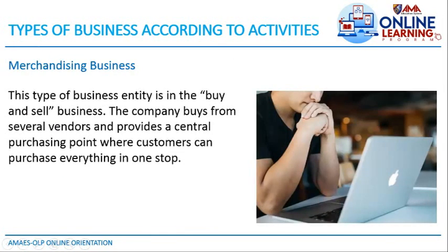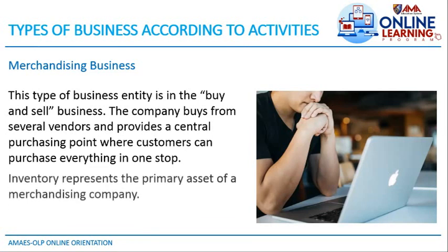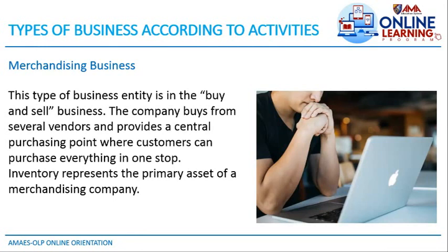The second type is the merchandising business — a buy-and-sell business. The company buys from several vendors, such as those in Divisoria, and provides a central purchasing point where customers can buy everything in one stop. Inventory represents the primary asset of a merchandising company. Inventory refers to your stocks or products available for sale — for example, every unsold shoe in a shoe store is their inventory.